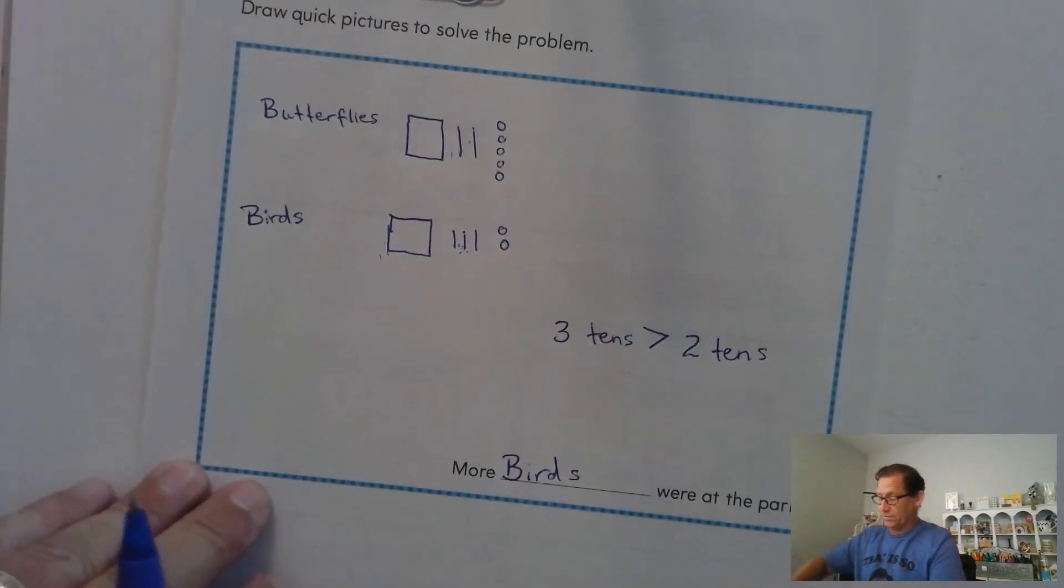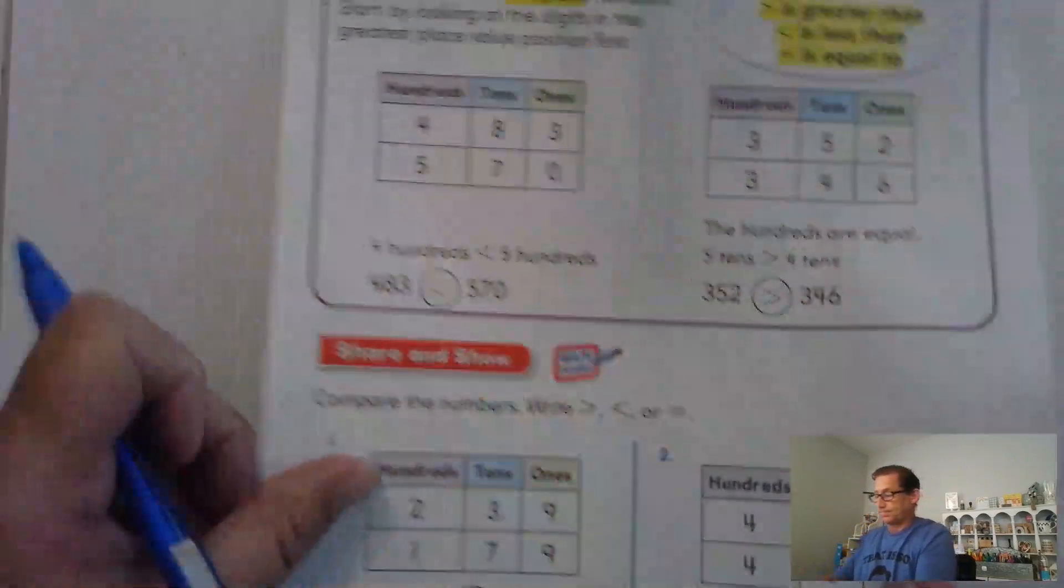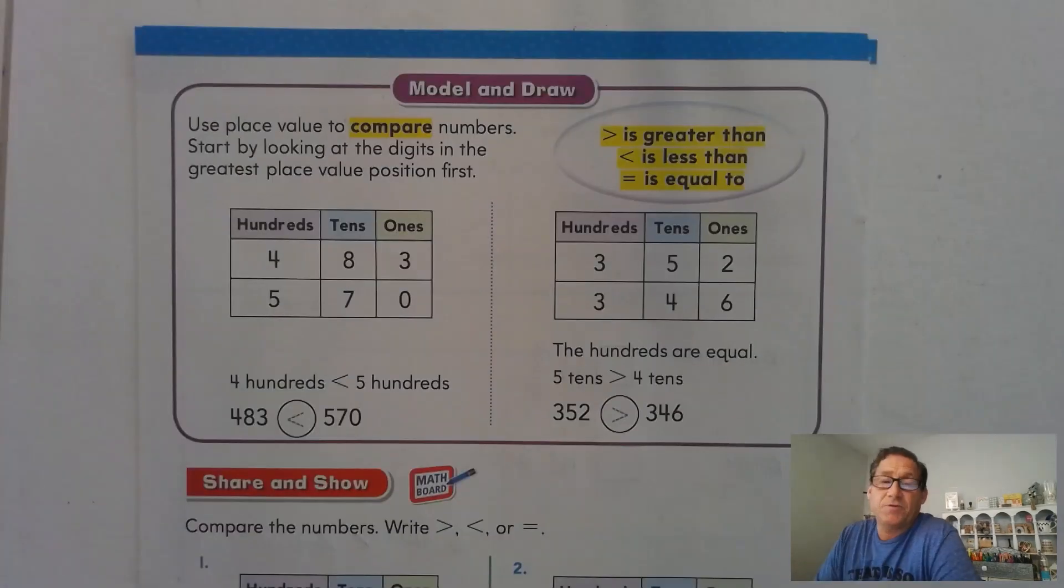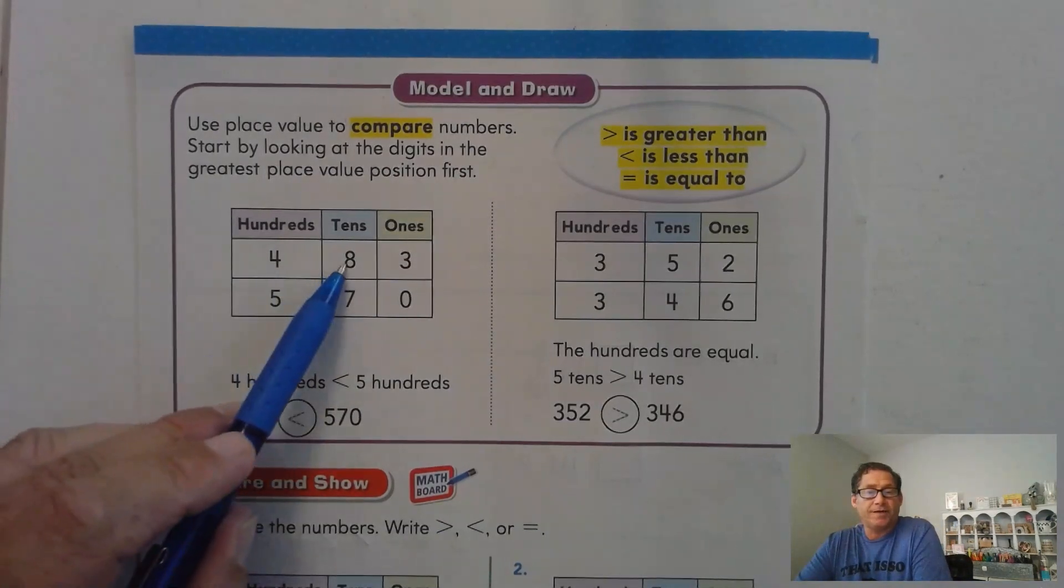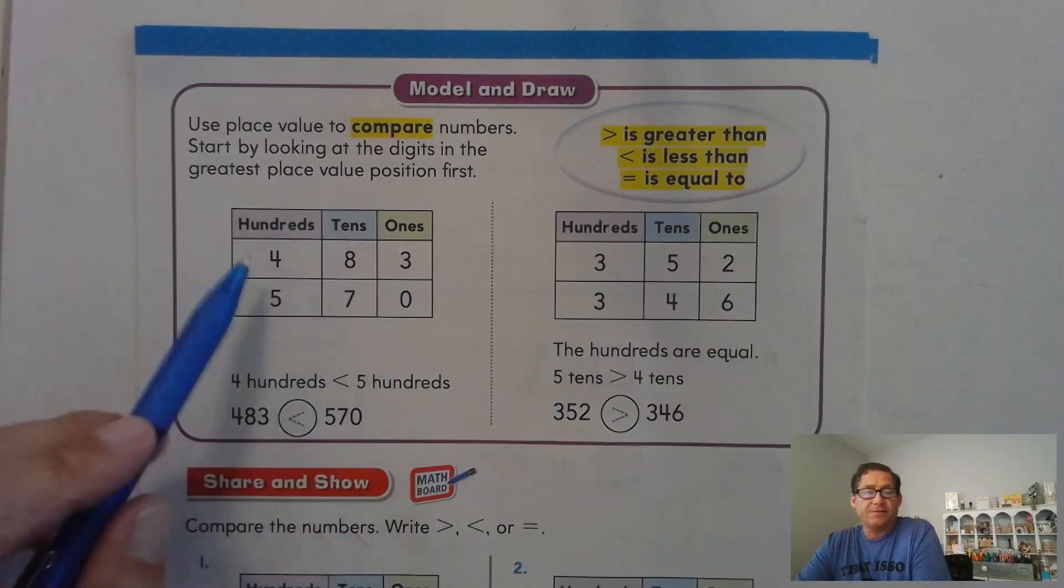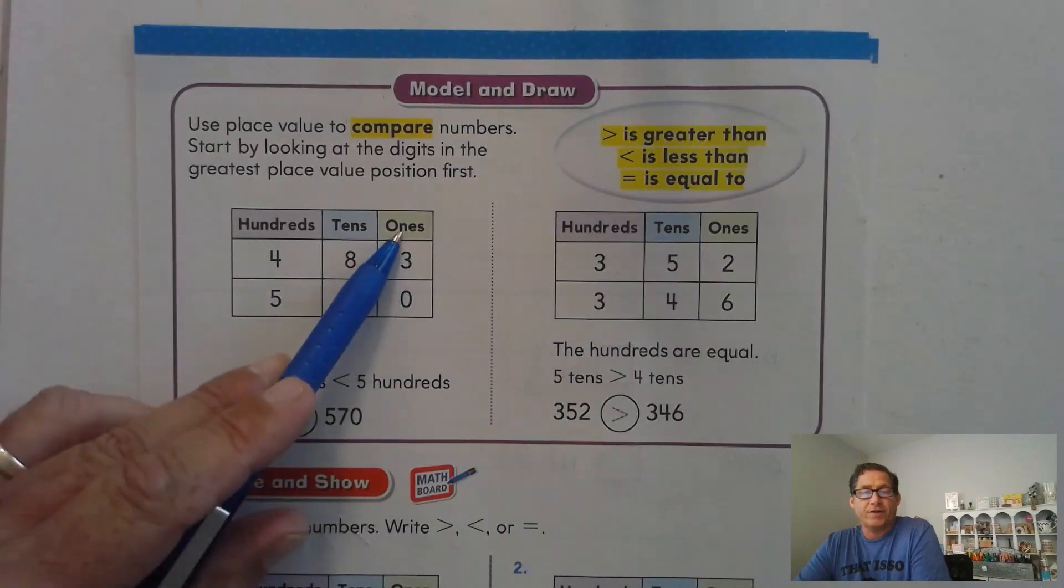All right, let's look at page 102. So use place value to compare numbers. Start by looking at the digits in the greatest place value position first. So for instance, we have this number 483.